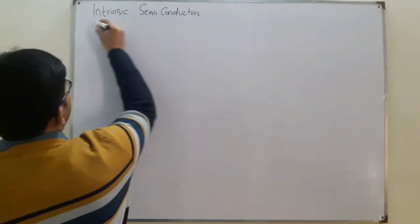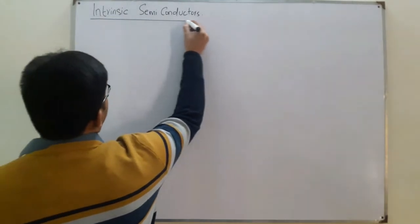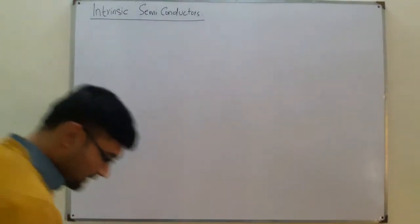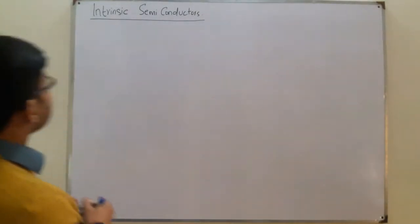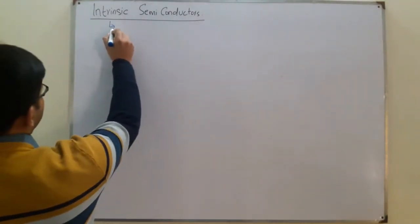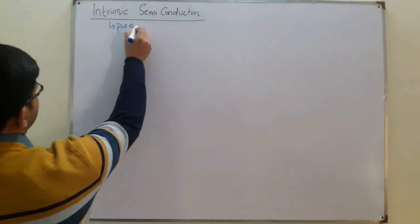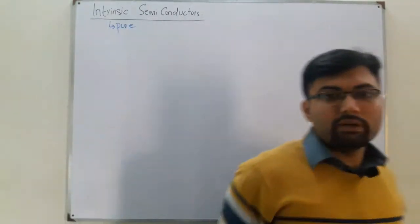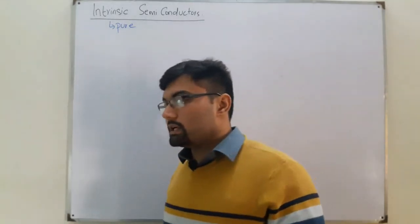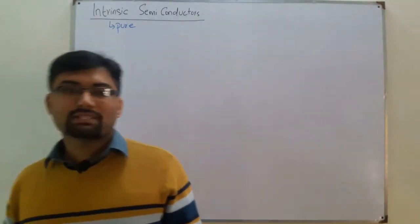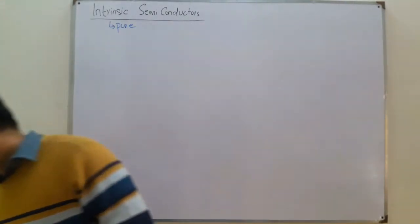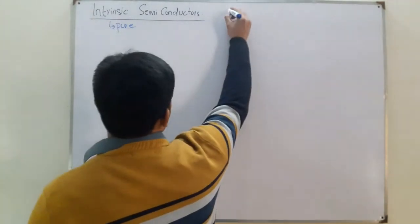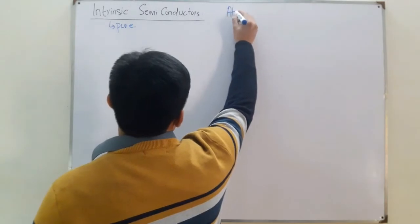Intrinsic — you know it means pure. Intrinsic means pure. In the previous videos we talked about the important semiconductors: germanium, silicon, and gallium arsenide. Today we study a little about their atomic structure.